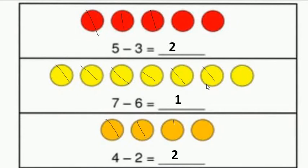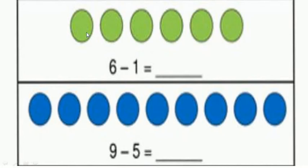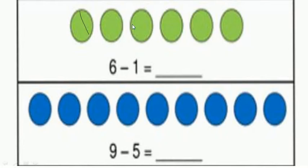Is the topic clear to you? Let's see more examples. There are 6 objects. We have to cut 1 among these given objects. We count the remaining objects: 1, 2, 3, 4, and 5. So 6 minus 1, we get number 5.